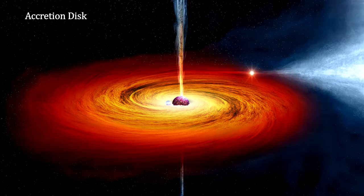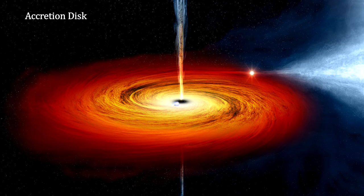So, for a neutron star, there's a surface for the inflowing matter to crash into, accumulate, and explode. But once it collapses into a black hole, the gas just disappears, and the thermonuclear explosions cease. We can conclude that an X-ray binary system without thermonuclear X-ray bursts contains a black hole.